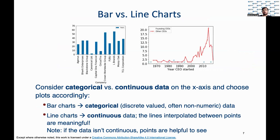One way to differentiate these plots is by understanding the kind of target variable that we are trying to represent. For instance, on the left side of the slide, we are trying to visualize how long a CEO stays in their job. Here the variable companies is categorical and therefore a bar chart is more likely to convey the message. If we want to track how many CEOs started last year, the year becomes a continuous valued feature and hence a line chart is a more suitable representation.